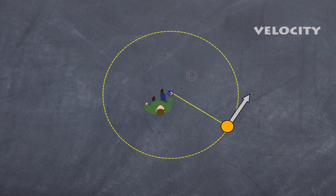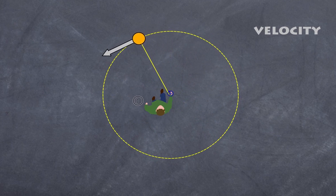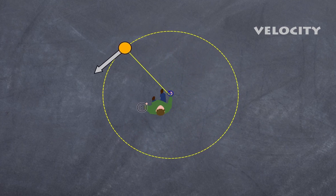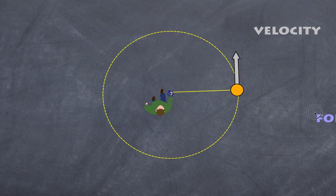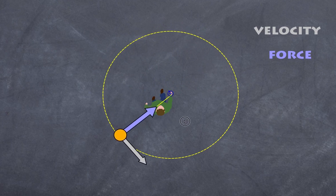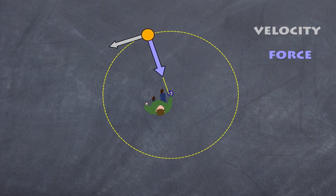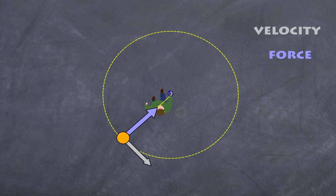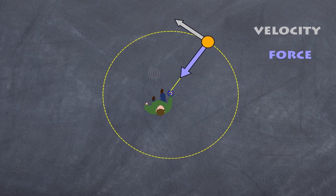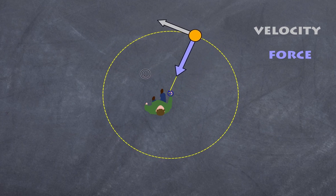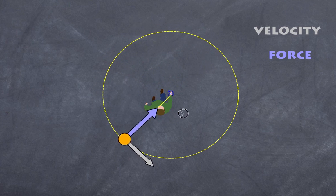The only reason something can accelerate is if there is a net force acting on it. In this case, the force causing the object to continually change direction is the force the gentleman applies via the string — a force pointing towards the center of the circle. As it rotates, the velocity is constantly changing, and so is the direction of the force, though the strength of the force remains constant. It is this force that causes the object to continually change direction.